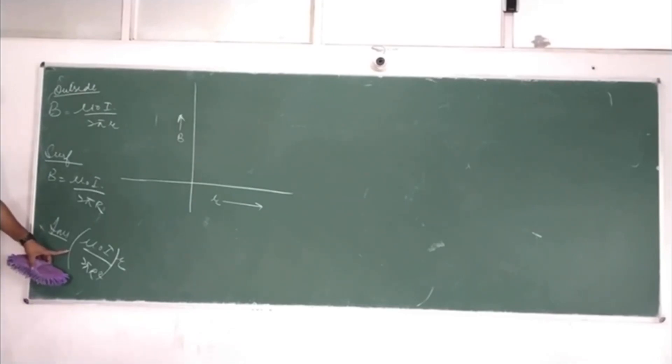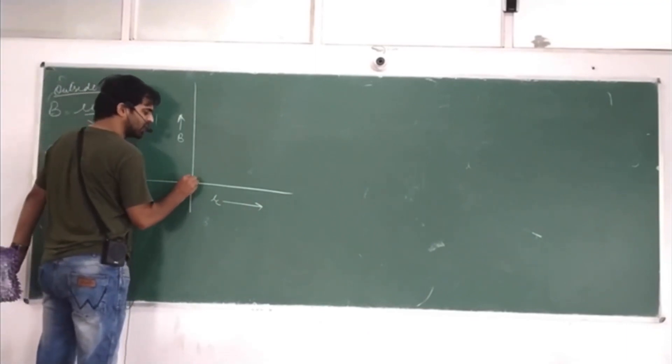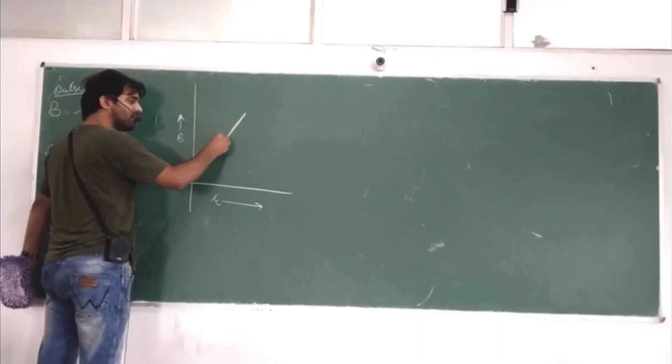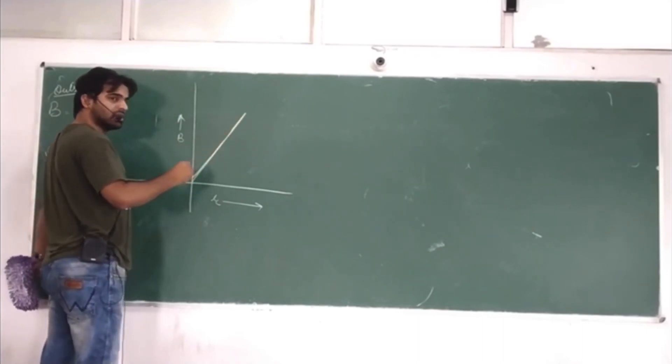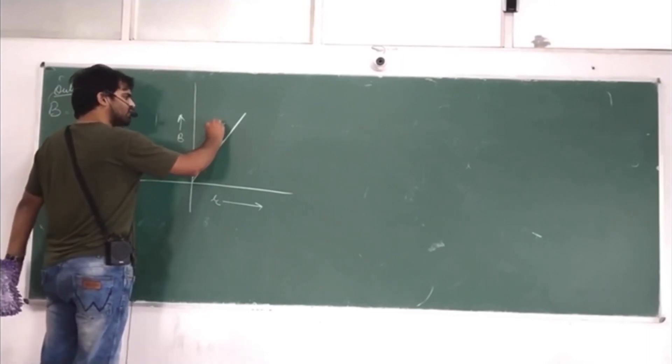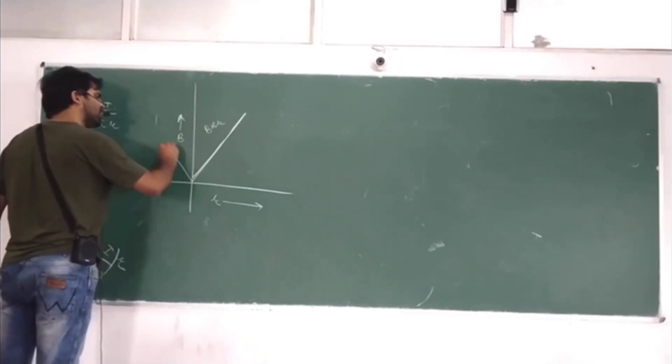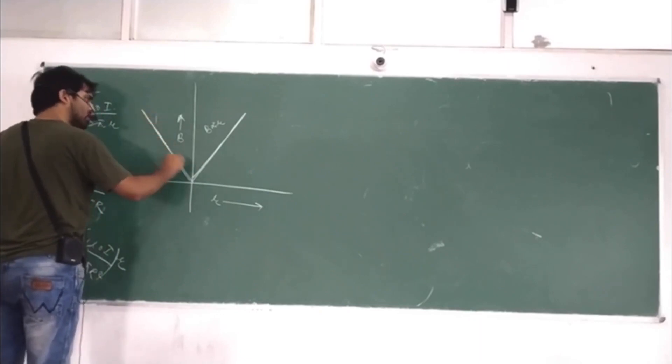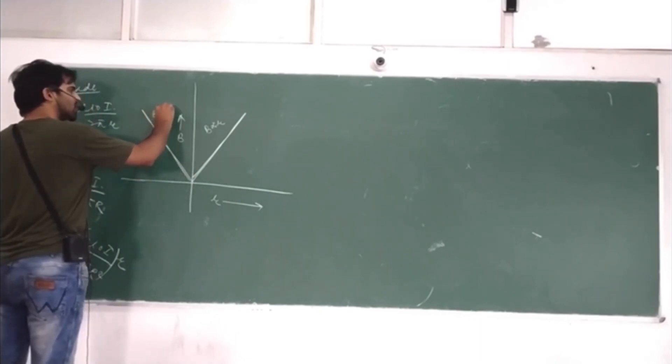Small r stands for distance. The B is directly proportional to small r. The graph is a straight line from the origin. The graph is directly proportional to r, and this is valid only inside. B is directly proportional to r.